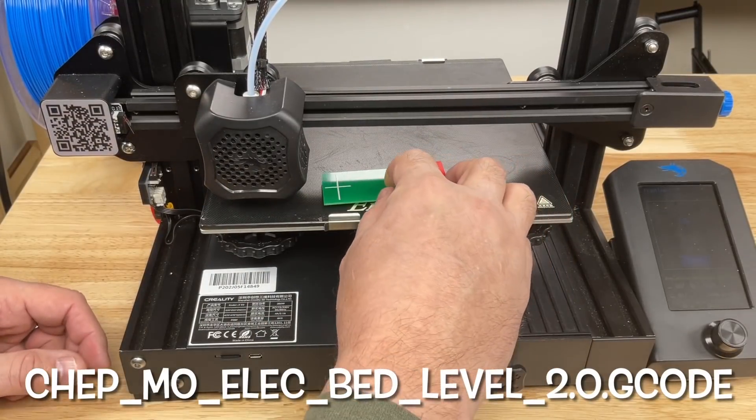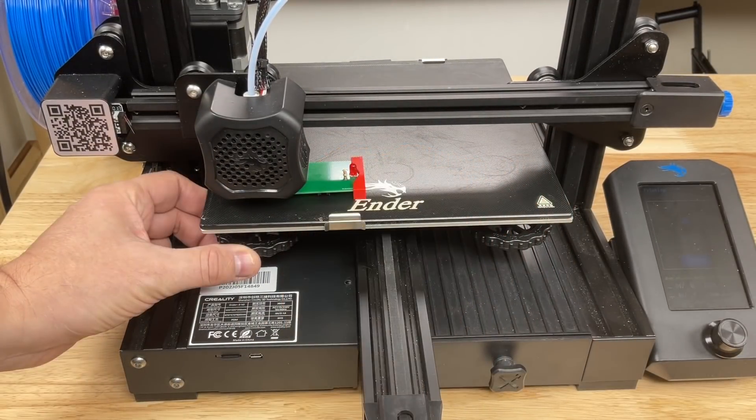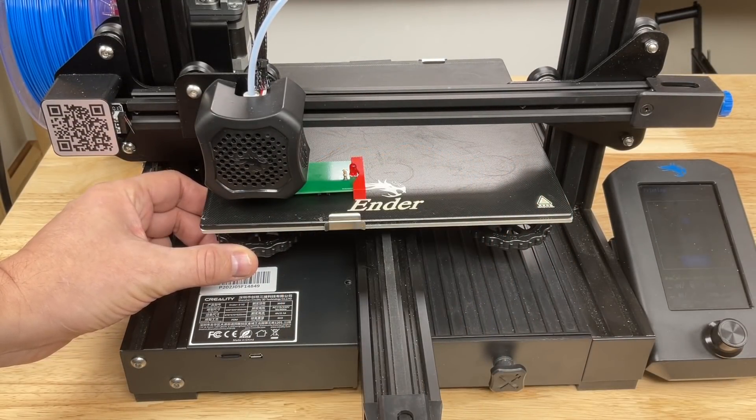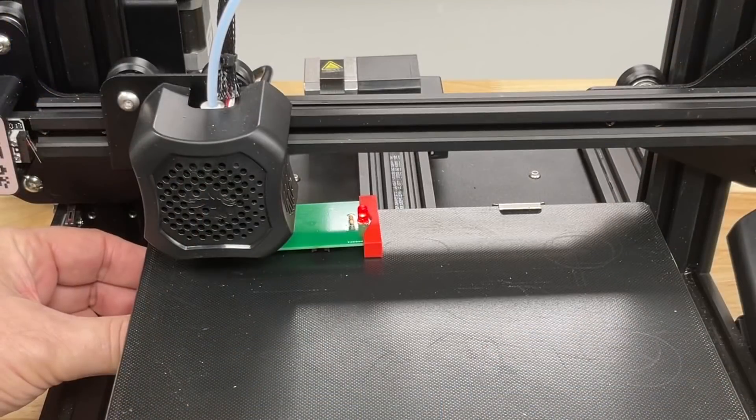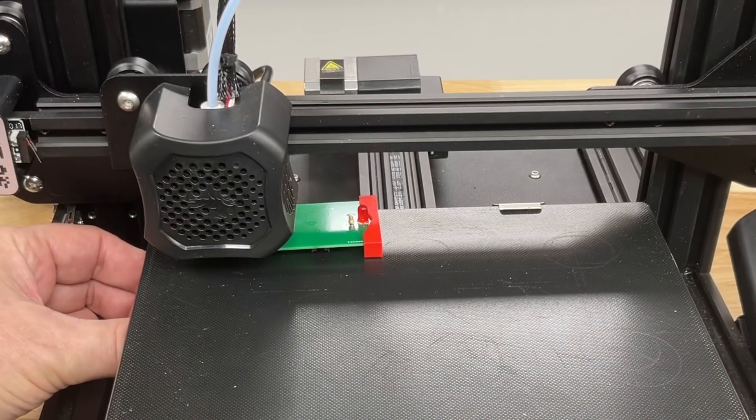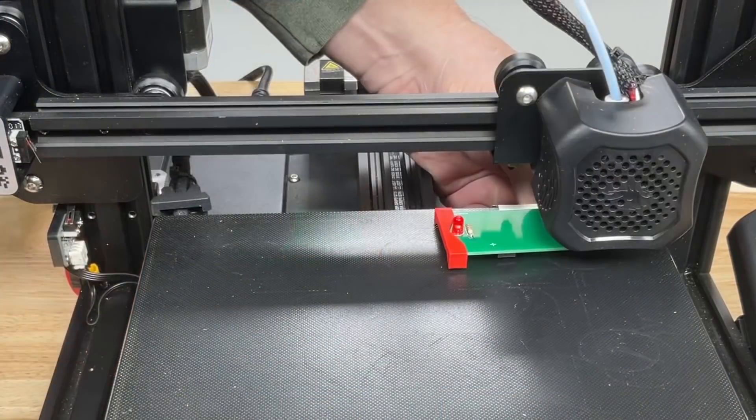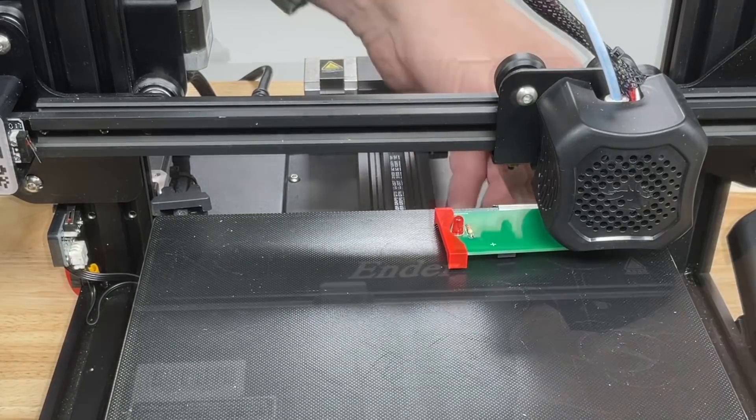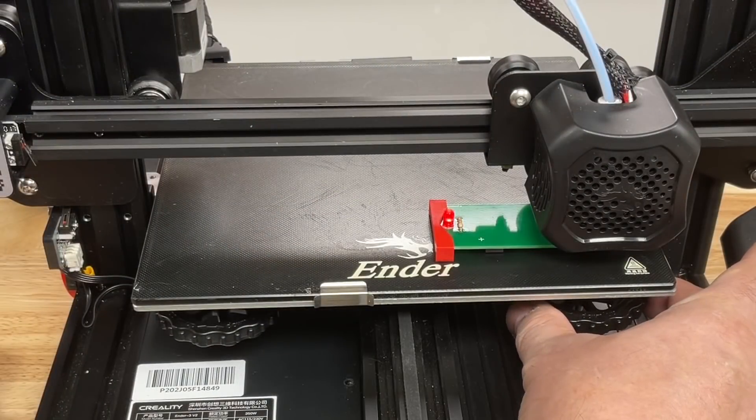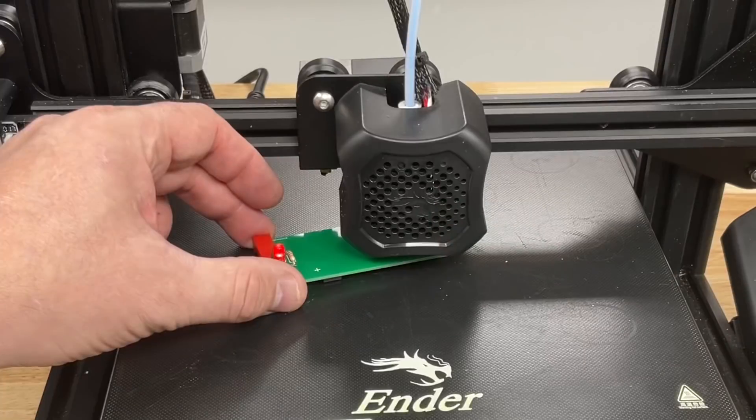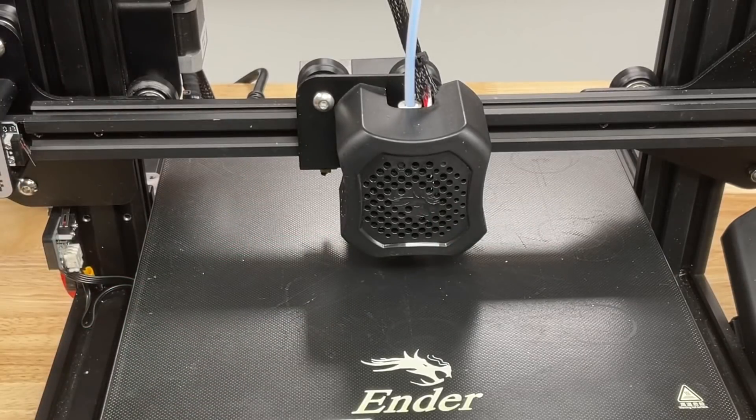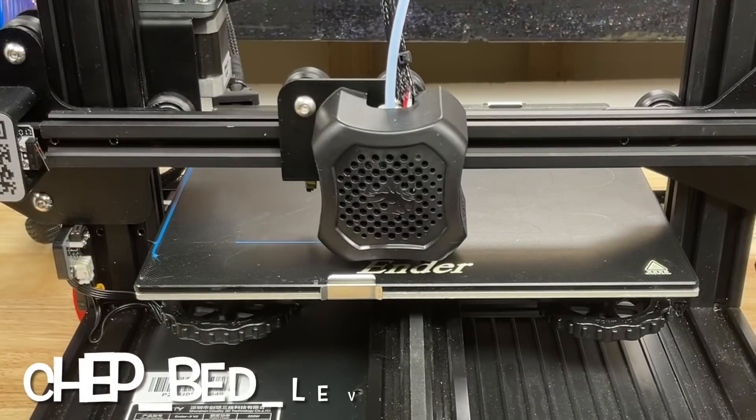I click print to run the bed level gcode then slide the tool under the nozzle and then slightly adjust. Now I did clean the nozzle before this to get rid of any gunk. Then I did the rear. Got that to just come on. The other side. Got that adjusted and the front corner was the final one. Now just to check I slid it under the center and it felt pretty good. So I'm happy with it.